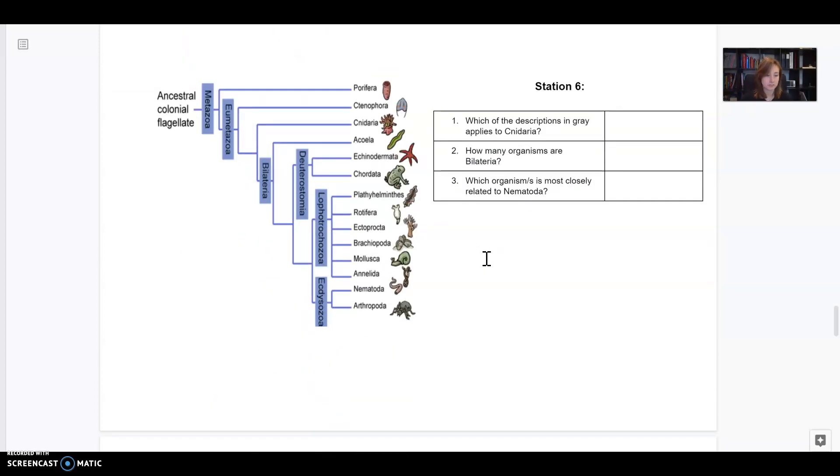Station six also has some cladogram practice. Let's do just the first question together. It says which of the descriptions in gray applies to cnidaria? Cnidaria are a group of animals that includes like jellyfish and stuff like that. But again, you don't need to know that to be able to answer this question. All you have to do is find cnidaria on this cladogram, which I see it right here. We're trying to find out which of the descriptions in gray applies to them.